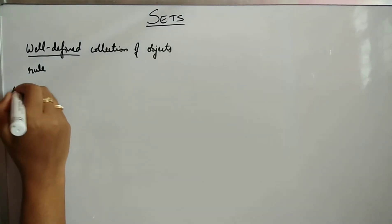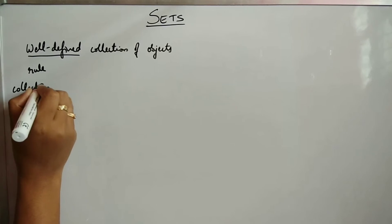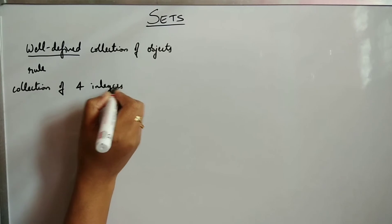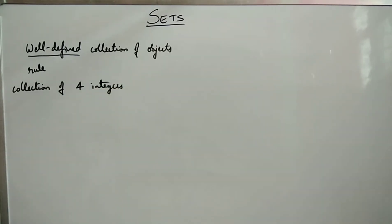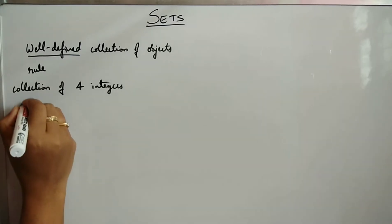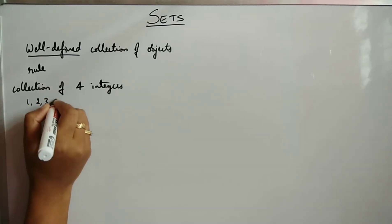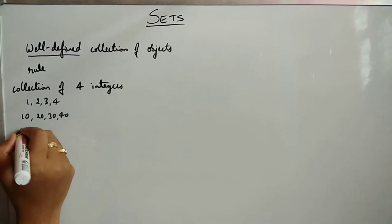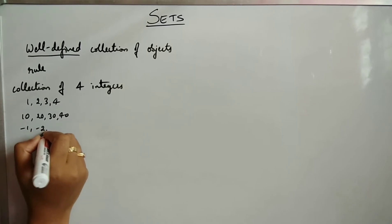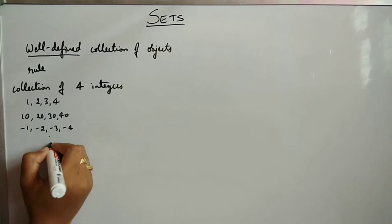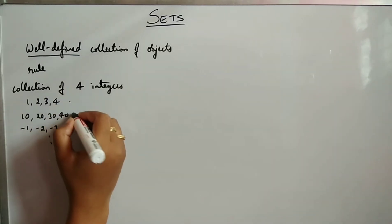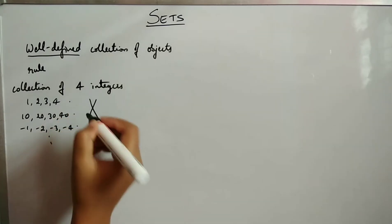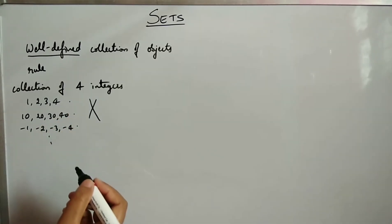Suppose I ask you to write a collection of 4 integers. One person may write 1, 2, 3, 4; another may write 10, 20, 30, 40; another may write -1, -2, -3, -4, and so on. Here the collection varies from person to person, so this is not a well-defined collection. We cannot call this collection a set.